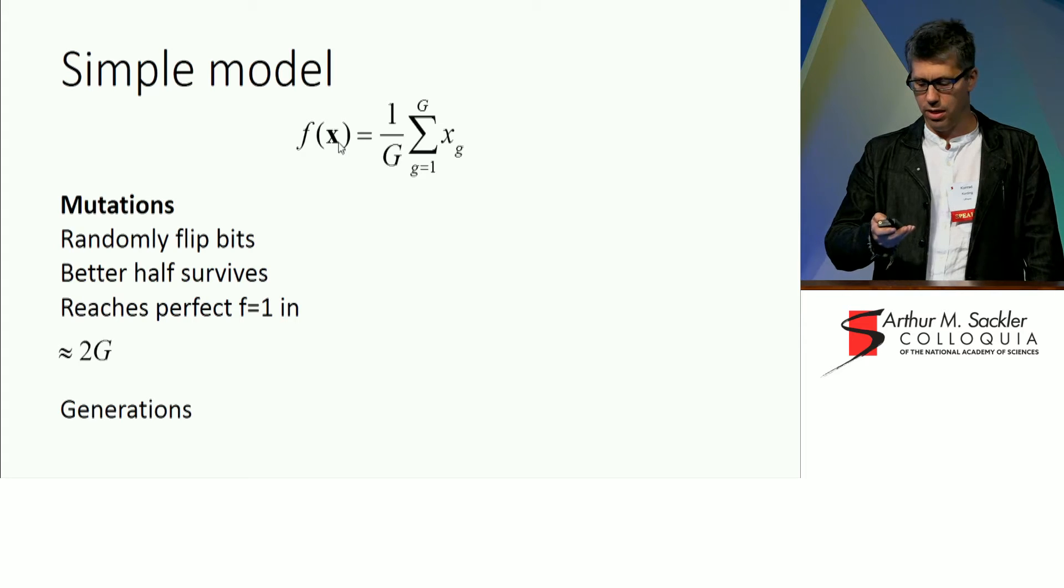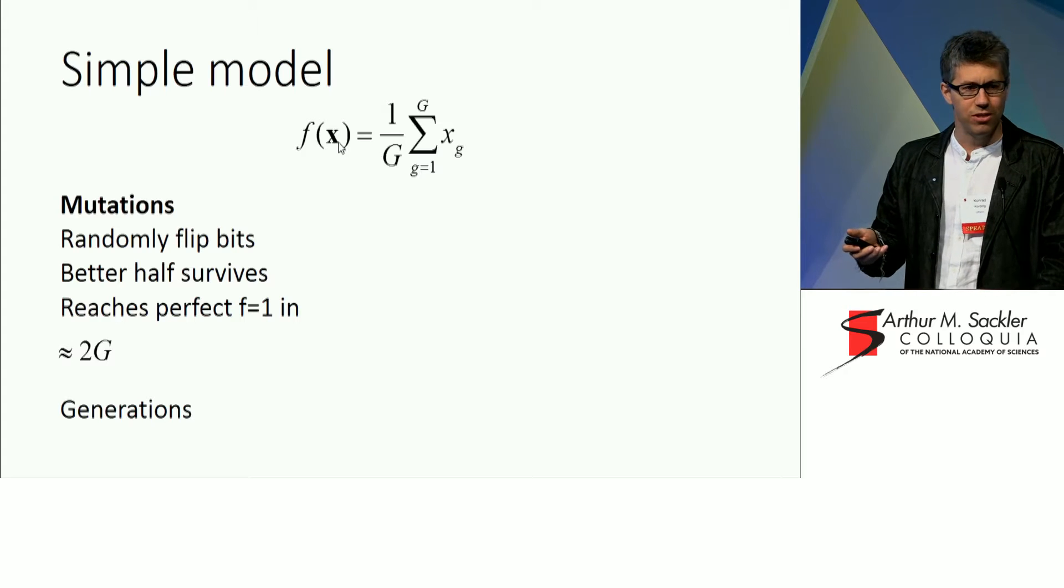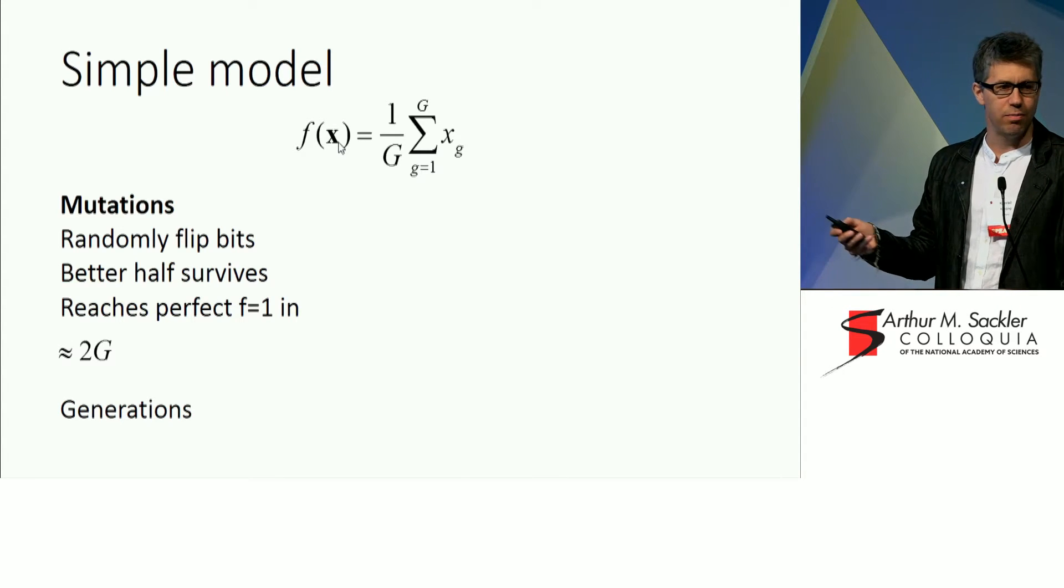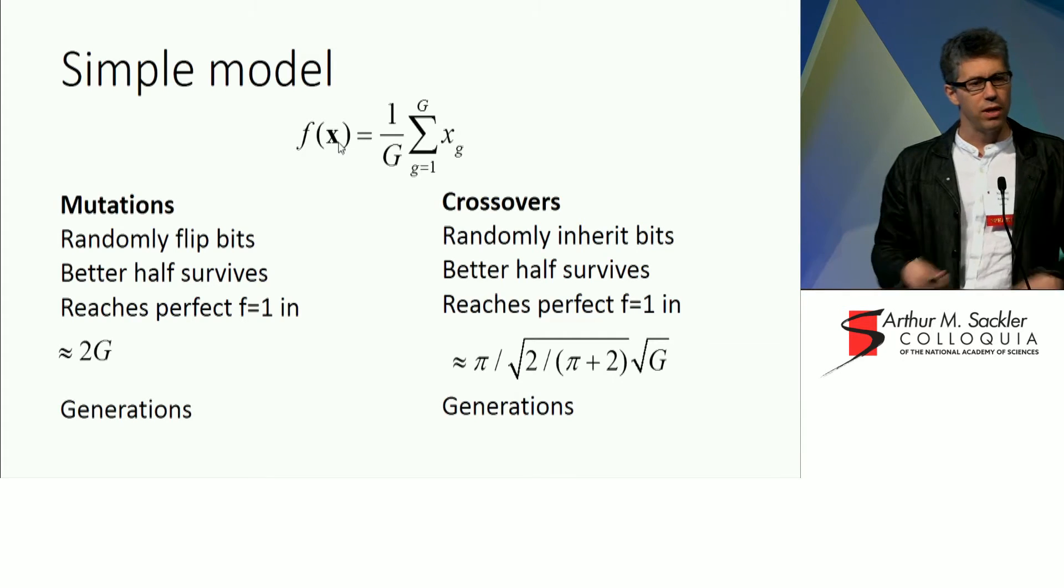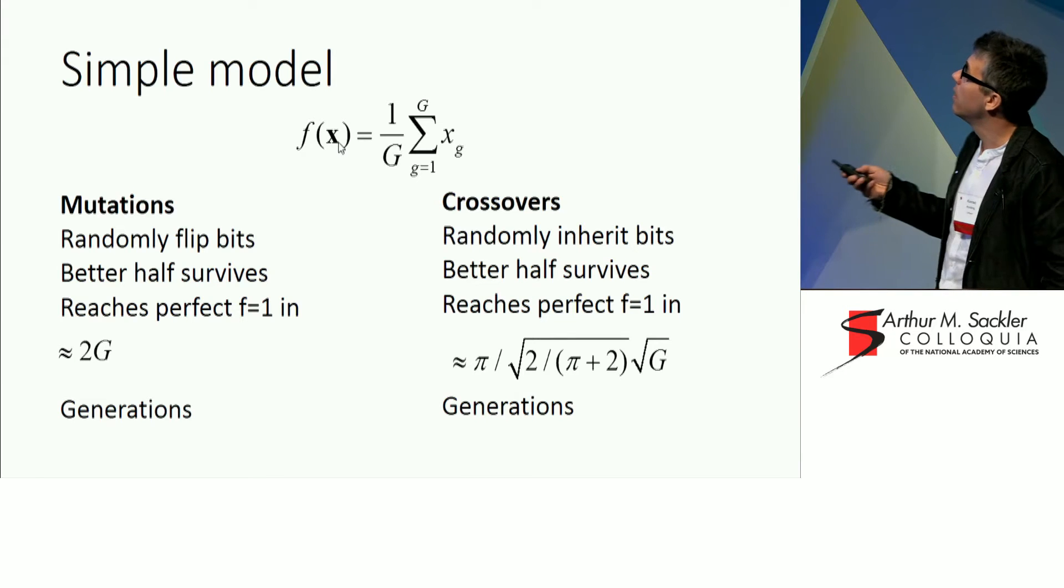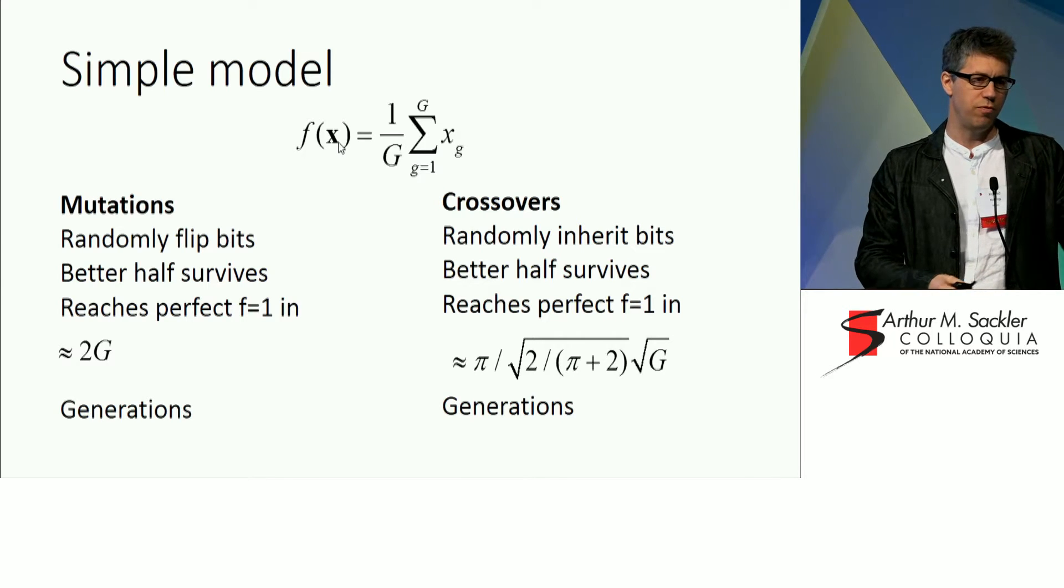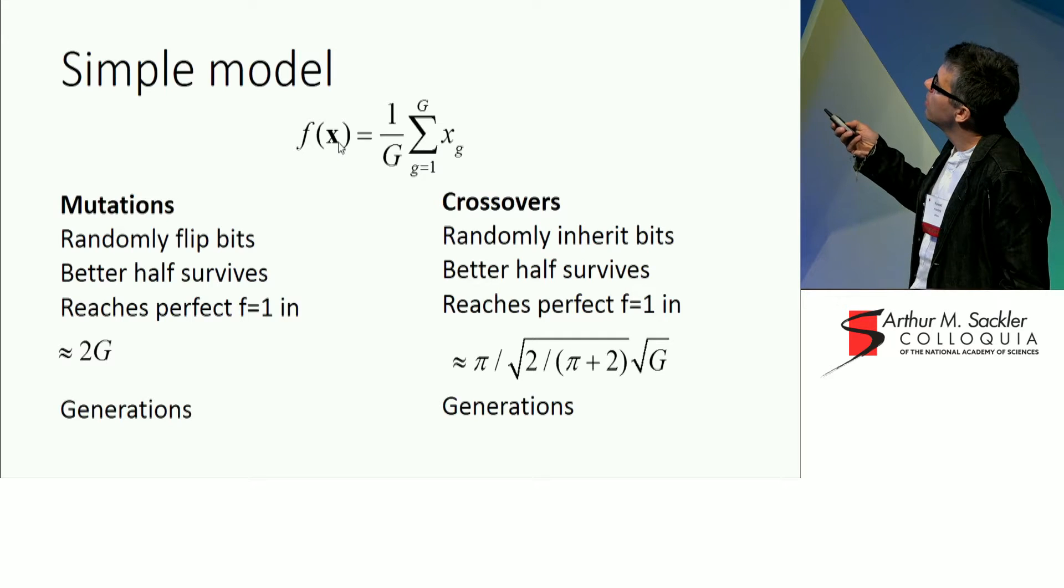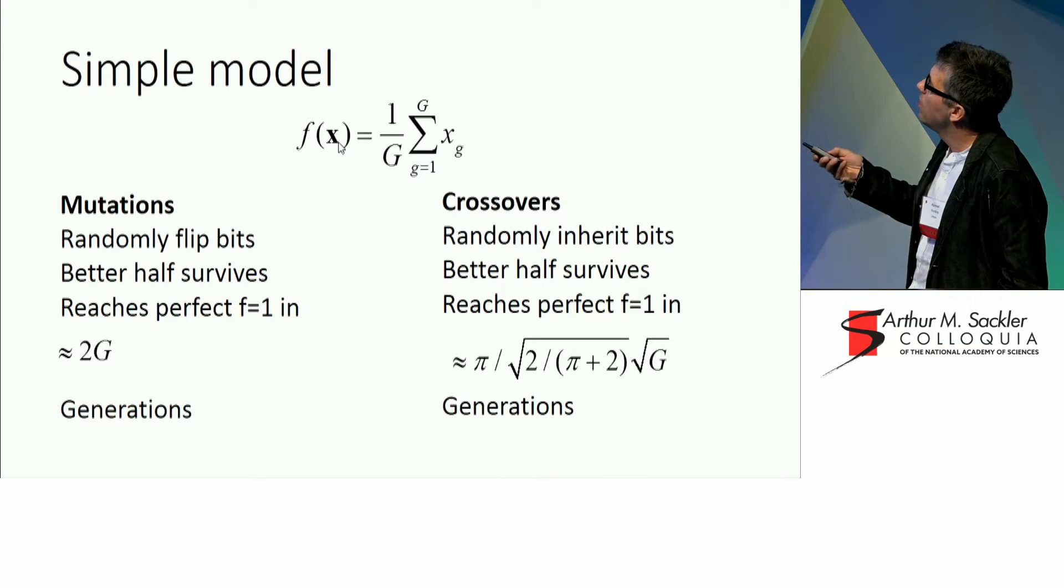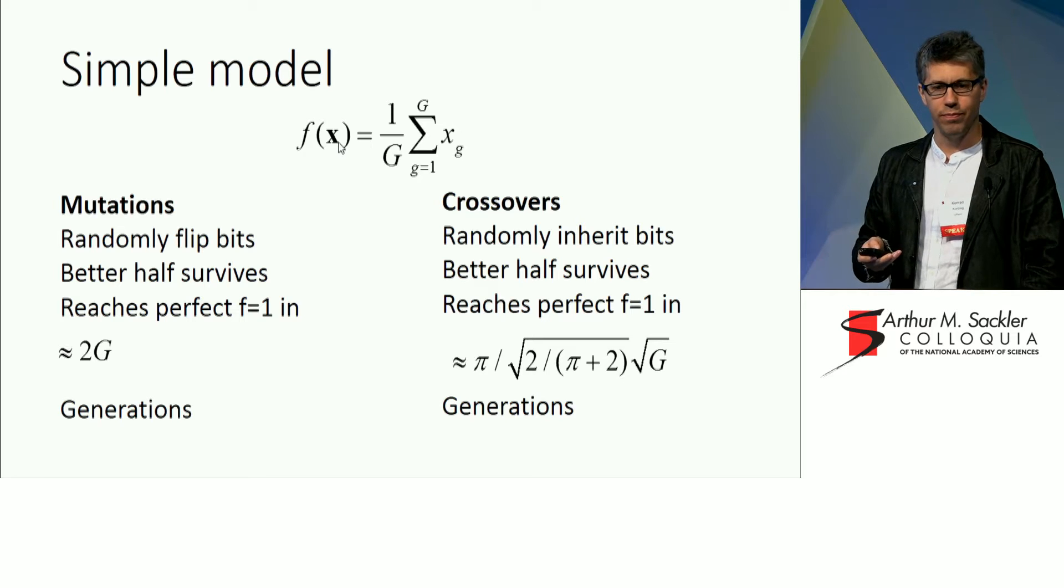And then the generation that we currently have makes babies and then half of them are eliminated and the other half goes to the next generation. And it reaches perfect performance, in that case, in about two G generations. G is the length of the genome that we have here. That is the one bit per generation calculation. And it's somewhat complicated. You have to early on flip lots of bits per generation, and then you have to play a temperature game where you flip less and less.